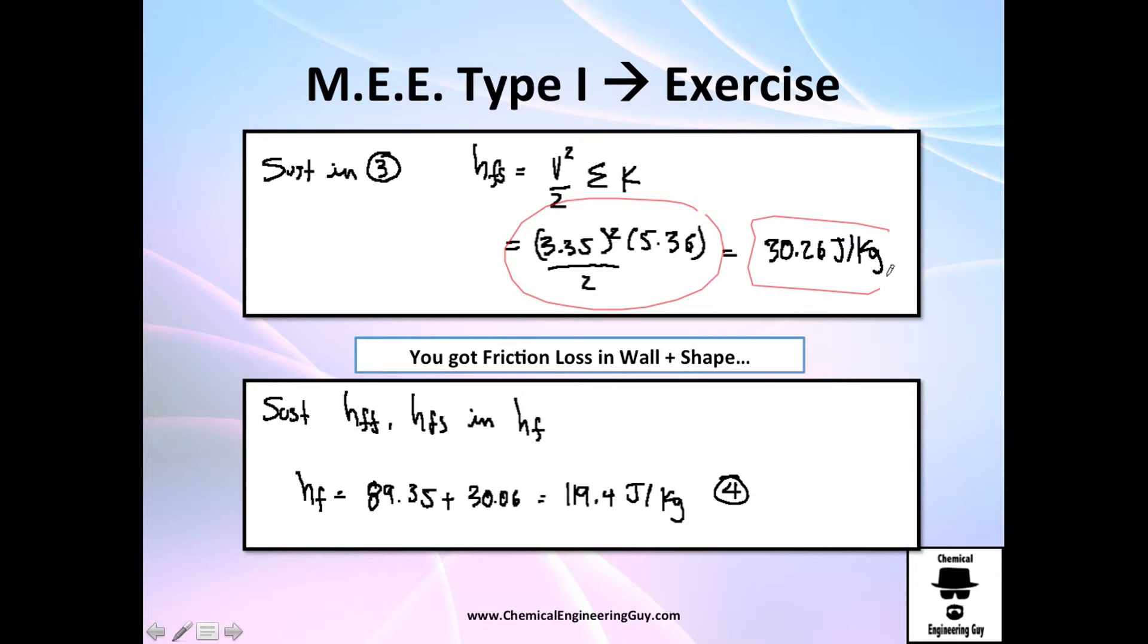So this is due to shape, 30 joules per kilogram. And this is due to wall, almost 90 joules per kilogram. Adding, I got 119.4 joules per kilogram. Let me call this equation number 4.